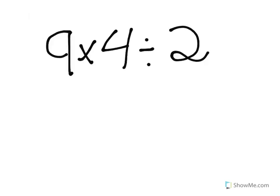Next, I did 9 times 4. I had to go left to right because multiplication and division is not greater than the other. So, 9 minus 4 times 4 equals 36. Then I have to bring down everything.